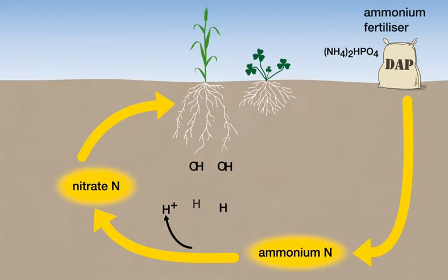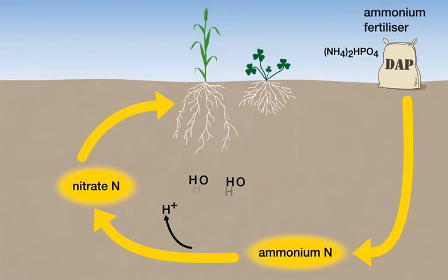These hydroxide ions combine with hydrogen ions in the soil to form water. This leaves one hydrogen ion, contributing to soil acidity.